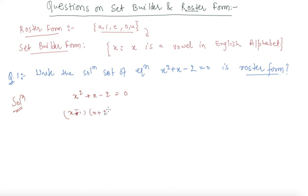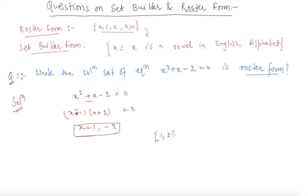Solving x² + x − 2 = 0, we get the two solutions x = 1 and x = −2. To represent this in roster form, we write the set as {1, −2}. This is the roster form of the solution set.